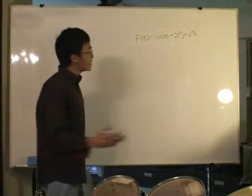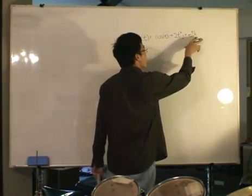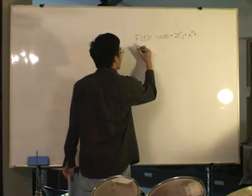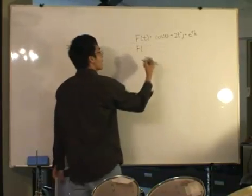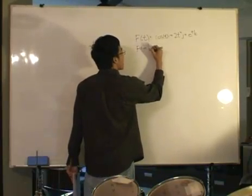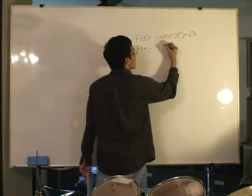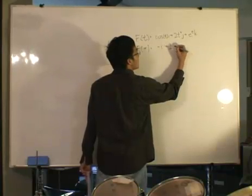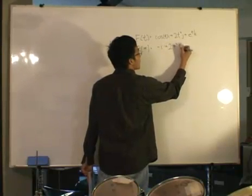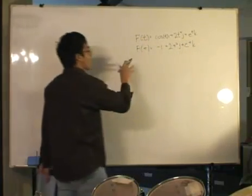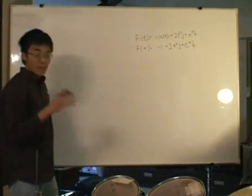Now we just simply pick a value for t, we put it inside there, evaluate all these things, and we get the function. So for example, vector function f, we let t go to pi, we will get cosine pi would be minus i plus 2 pi squared j plus e to the power of pi k. That is our vector function.